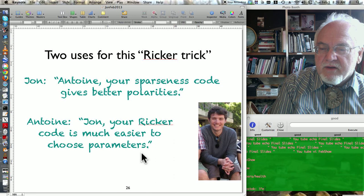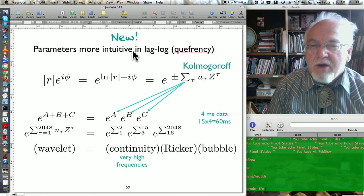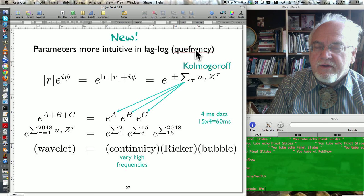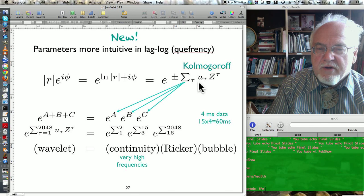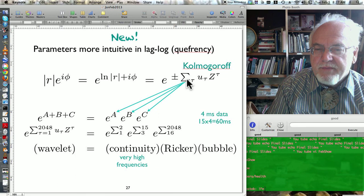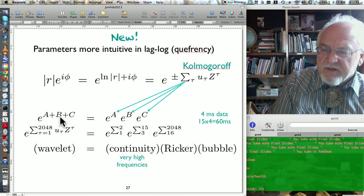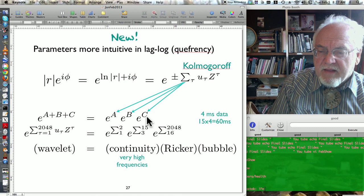So here's something new that I'm just revealing in public for the first time to you folks today. Parameters are more intuitive in lag-log equivalency space, and here's why. So here's our filter, and we've gone through the Kolmogorov process, and we've got these U's, and then we've got this Z-transform sum. We can break this sum into three parts. Let's call these terms the A, B, and C terms. Here's A, here's B, here's C. It's like three filters operating one right after the other, kind of independently from one another. And I have to choose where to break the sum.